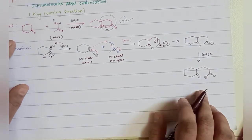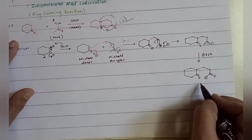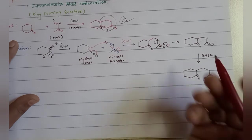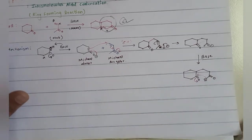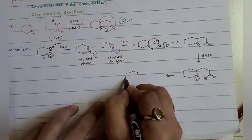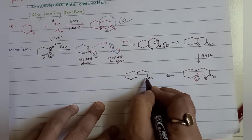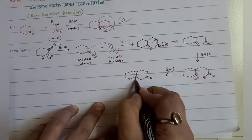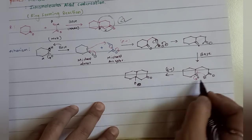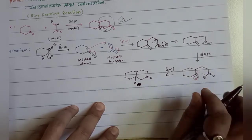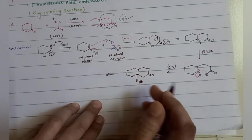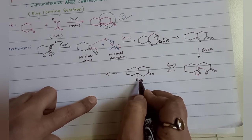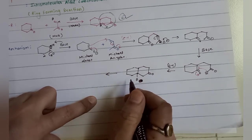Once you get this carbanion, in the next step the carbanion attacks the carbonyl carbon, and the double bond shifts over. Carbon-carbon bond formation takes place, and oxygen becomes negative. Again protonation occurs - H comes over to the oxygen, giving an OH group. This protonation step completes the ring closure.